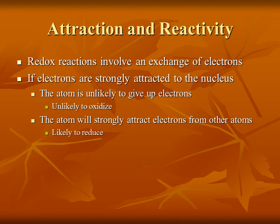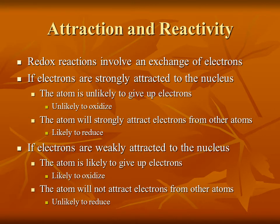If the electrons are strongly bound to the nucleus, it's going to take a lot of energy to pull the electrons off, meaning you're unlikely to lose electrons and hence unlikely to oxidize. Atoms with a strong attraction between electrons and the nucleus are very likely to reduce — they're very likely to rip electrons off of a nearby atom. Conversely, if electrons are weakly attracted to the nucleus, the atom is likely to give up electrons and oxidize, and will not attract electrons from other atoms, making it unlikely to reduce.